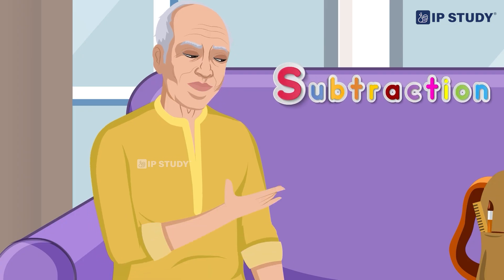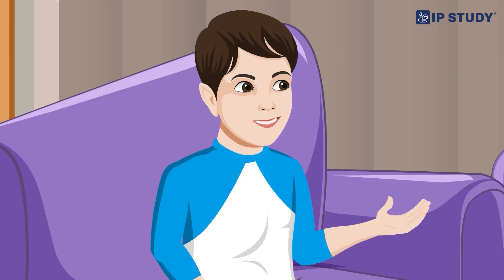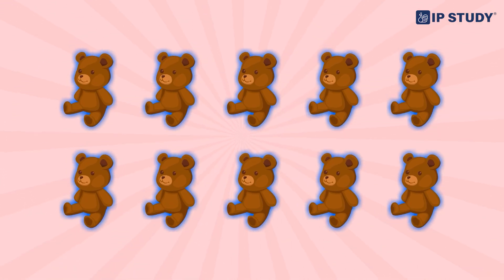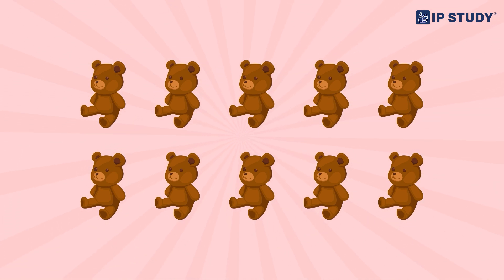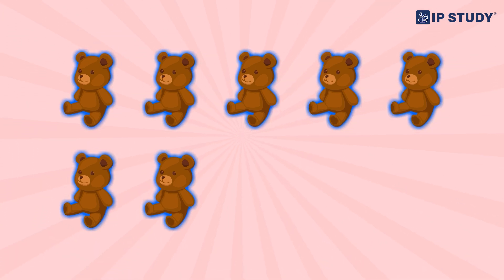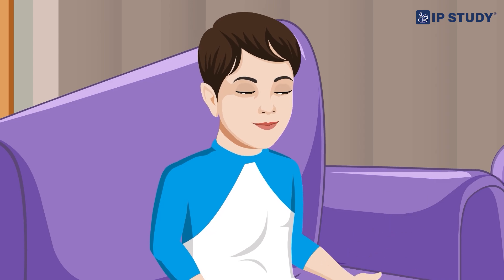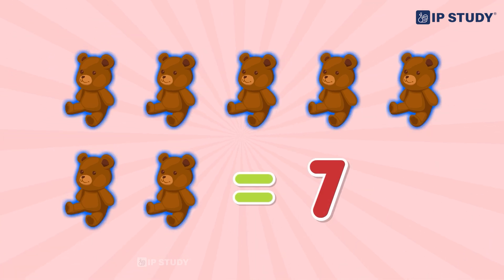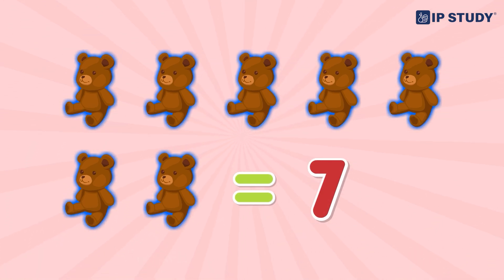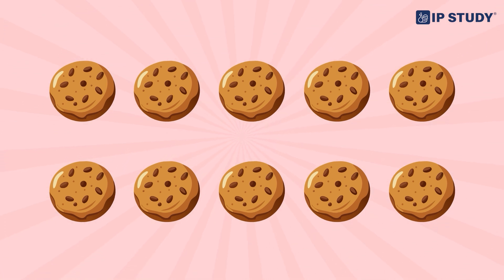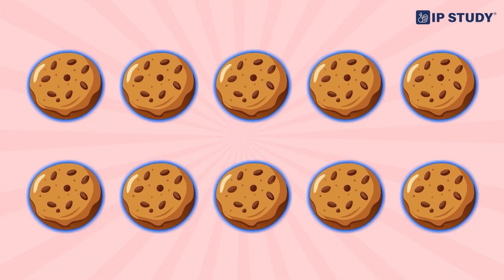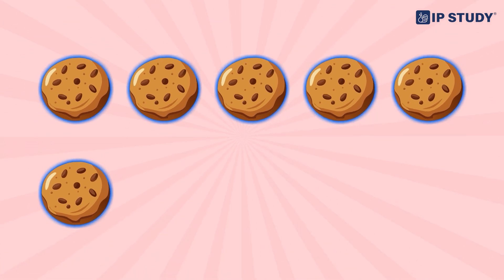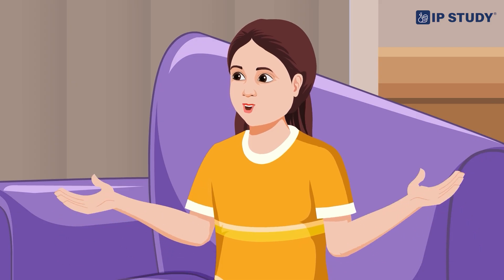Grandpa explains that subtraction is when we take one number away from another. He gives an example: if you have 10 toys and give away 3, how many are left? A child guesses 4, but Grandpa corrects them — the answer is 7. He then tries another example: 10 cookies, eat 4, and 6 are left. Urvashi answers correctly and is praised for catching on quickly.